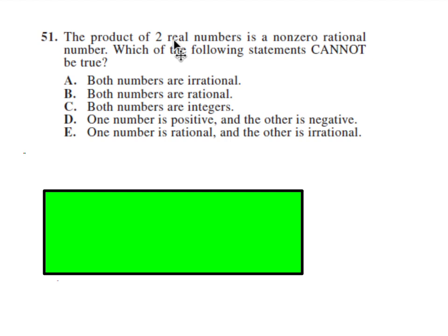Number 51. We're going to multiply two real numbers together. It says product, and we're going to get a non-zero rational number, so it can't be zero, but it has to be rational. What does rational mean? It's a number that can be written as a fraction, or if it's written as a decimal, the decimal stops at some point or becomes a repeating decimal.